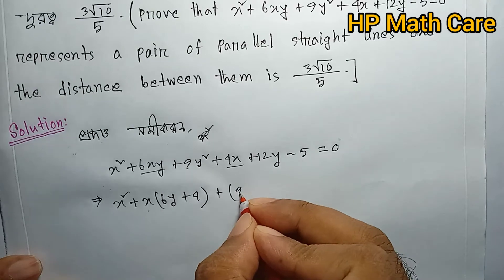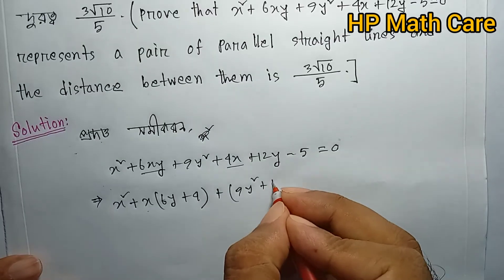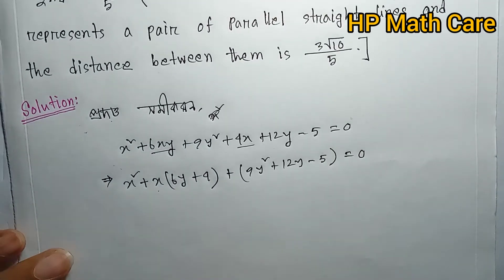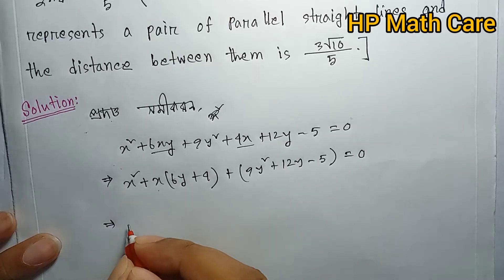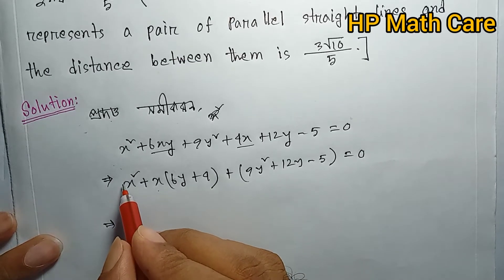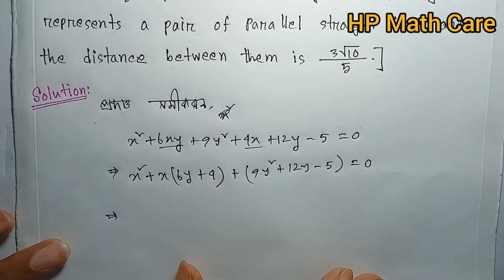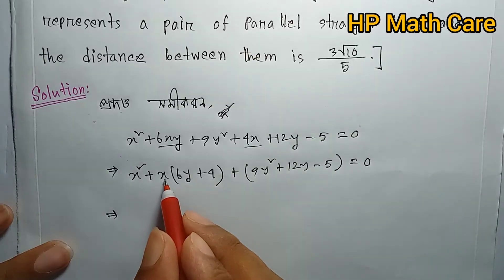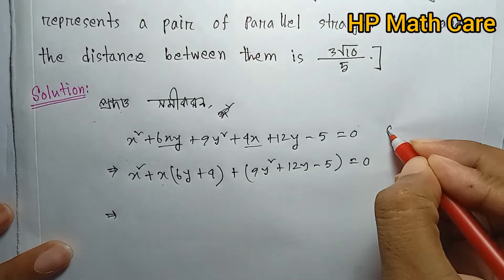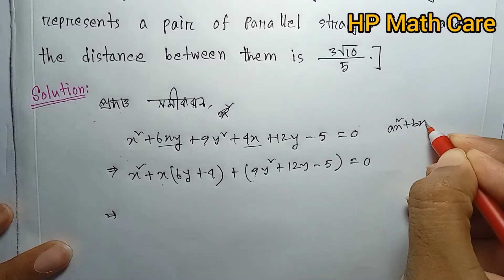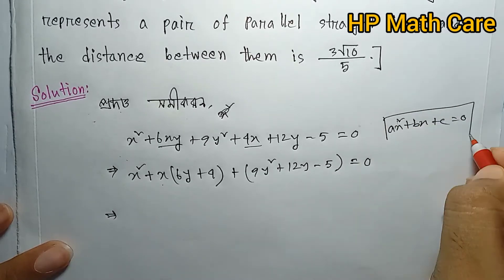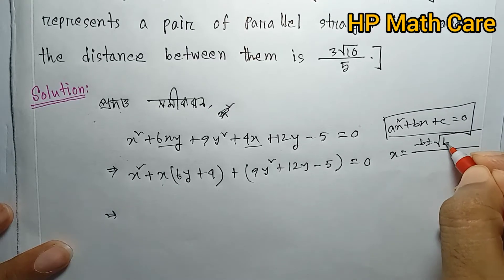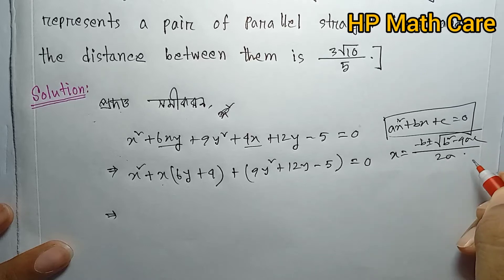We have 9y squared plus 3y minus 5 equals zero. Using the quadratic formula: for x squared plus bx plus c equals zero, x equals minus b plus or minus root of b squared minus 4ac, all over 2a.